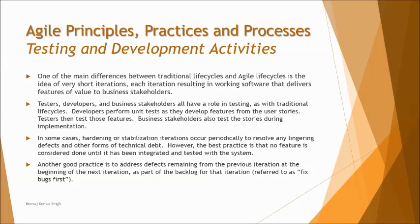We call it a stabilization iteration, where we try to complete anything required before moving to the next set of activities, with no compromise on integrating the system — as we understood from continuous integration in the previous chapter. We also have a concept called 'fix big bugs first': whatever bugs are pending from the previous iteration are given priority and fixed before moving to the next iteration, because skipping that increases workload and may hold up execution.